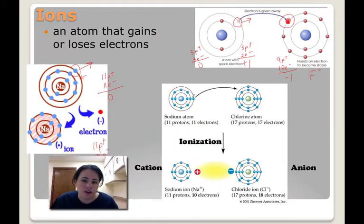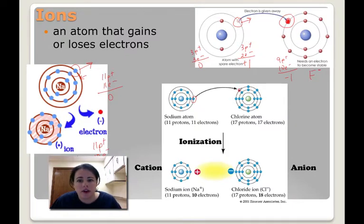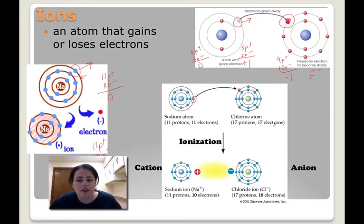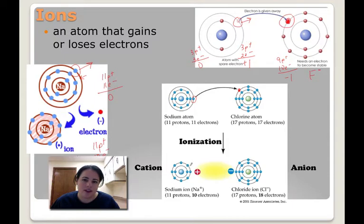Sodium again will give up an electron and drop down to become stable. And in this other case, 7 valence electrons means it's easier to find 1 more to become stable, so that atom will actually gain an electron. So: if you gain an electron, you become negative; if you lose an electron, you become positive. Just remember — when you're hanging around with negative people and they finally go away, it's a more positive place, and vice versa.